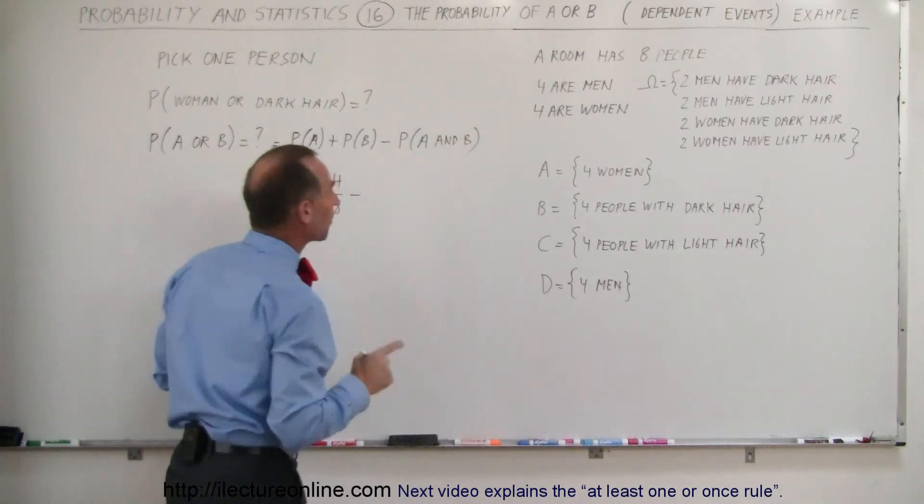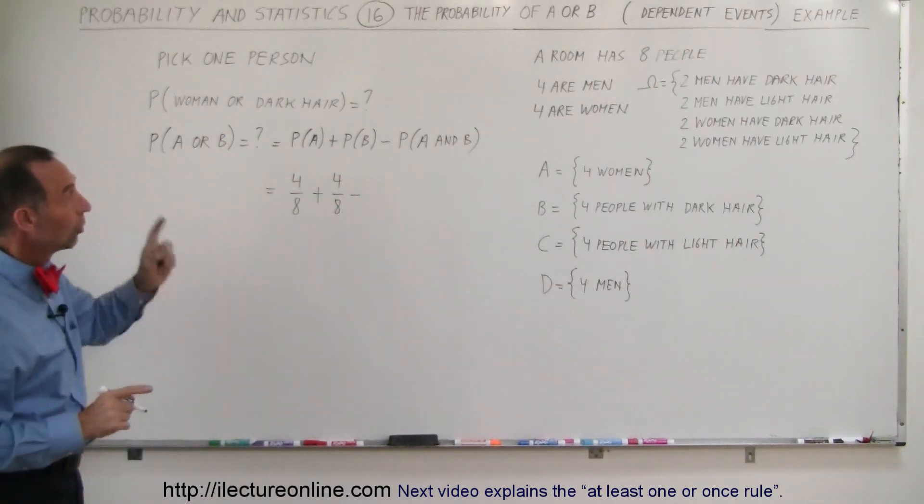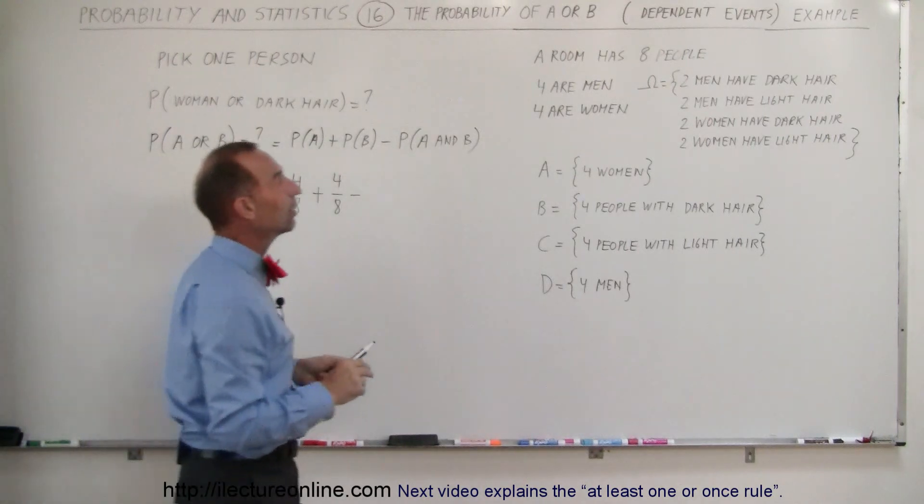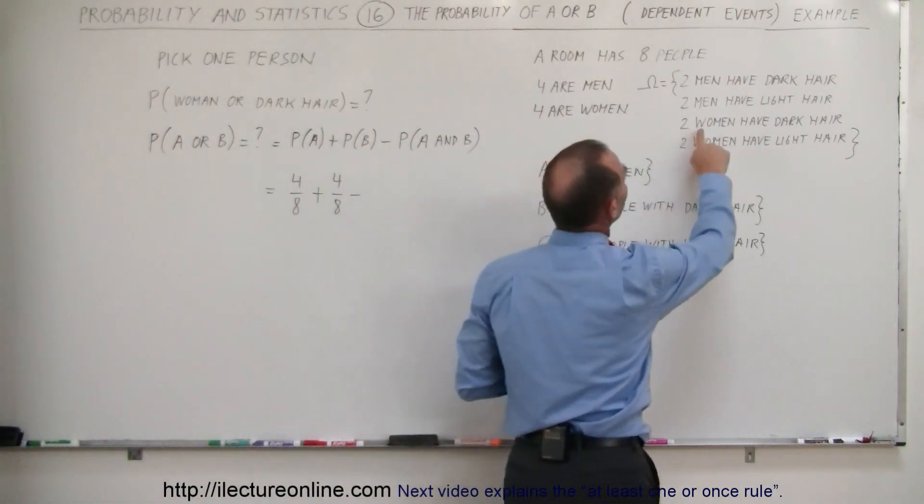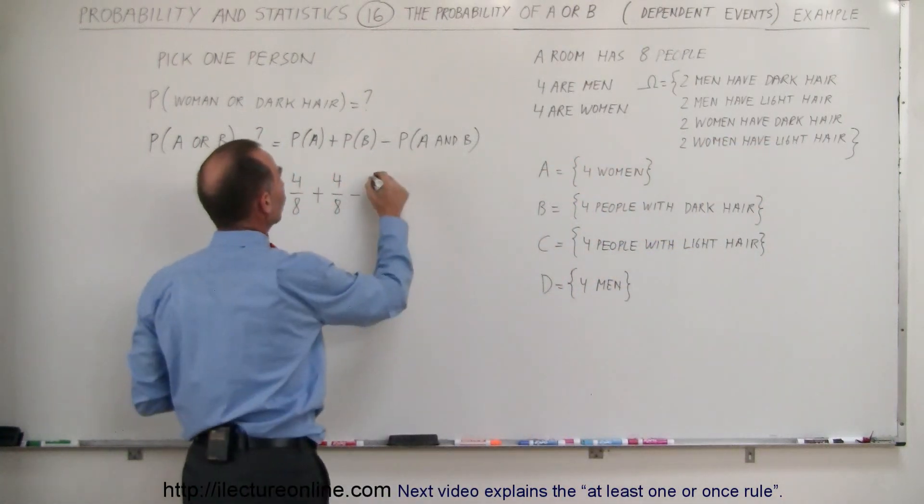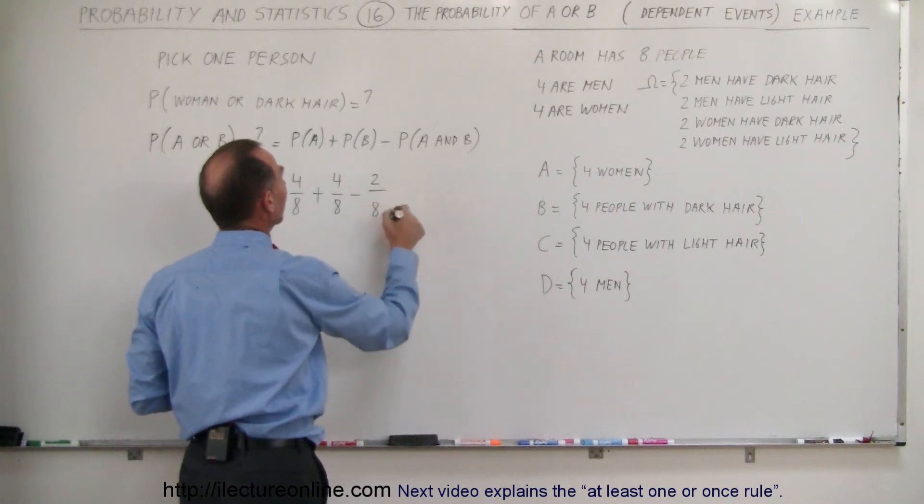Now we have to subtract the probability that it's both a woman and has dark hair. How many are there? Well there are two people that are women and have dark hair, so there's two possible outcomes there, so minus two out of a total of eight outcomes.